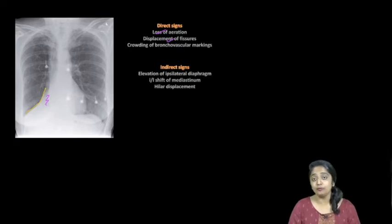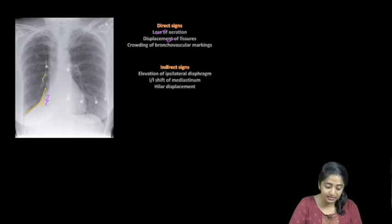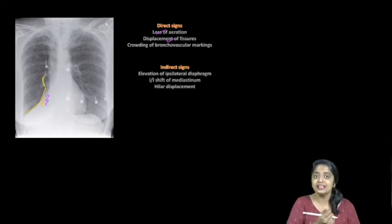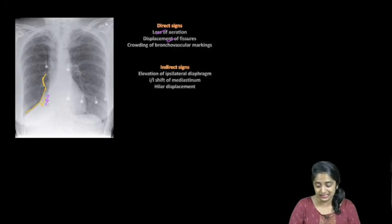And I've got crowding of bronchovascular structure. That is why you're not able to see anything here clearly. Basically you can see that the descending pulmonary artery has been pulled down and it's not clearly seen. Now coming to indirect signs, elevation of the ipsilateral hemidiaphragm.